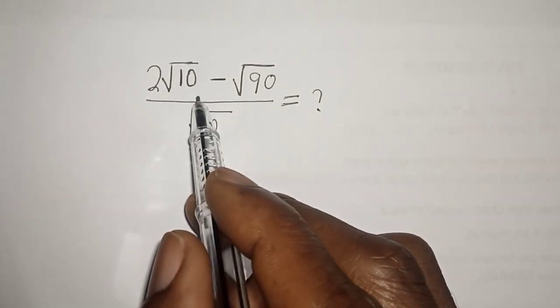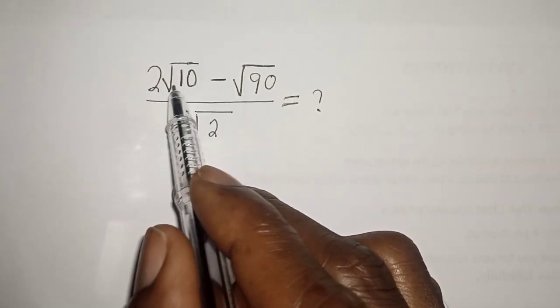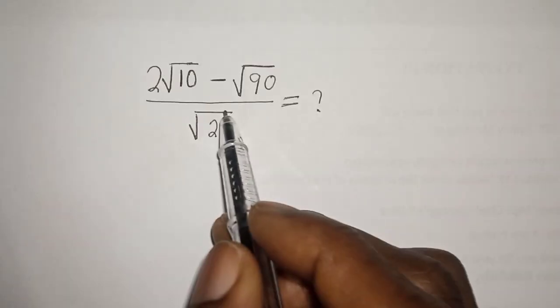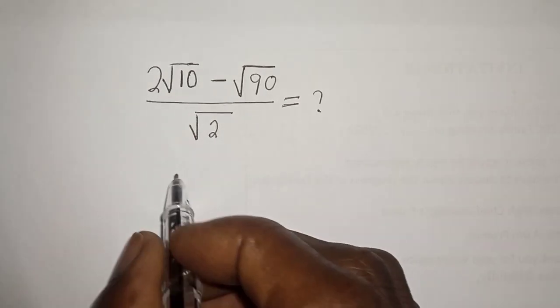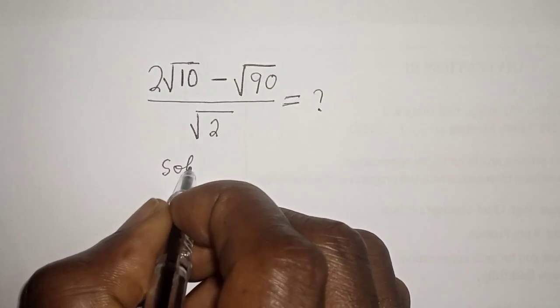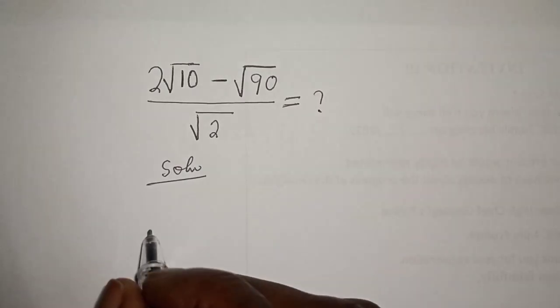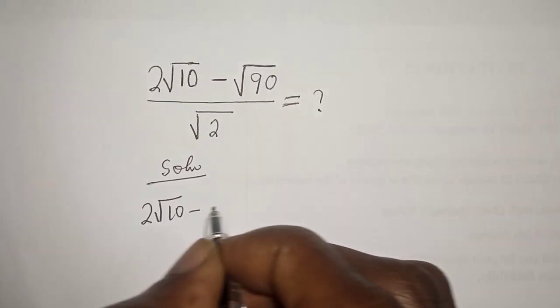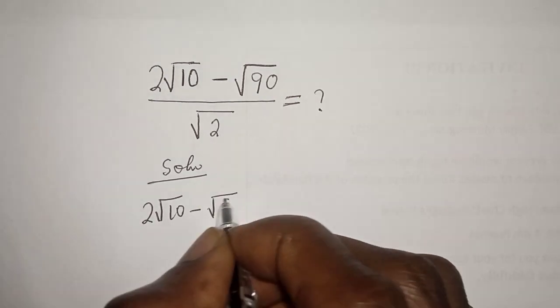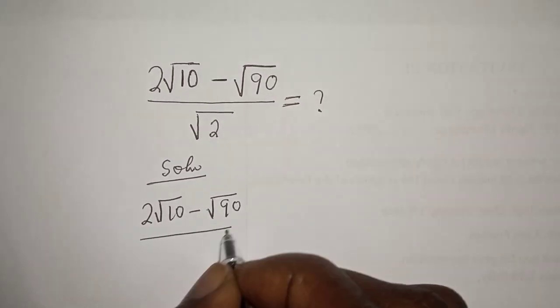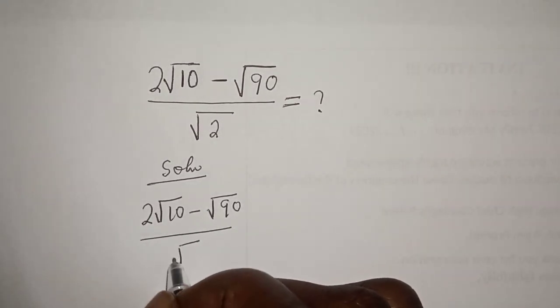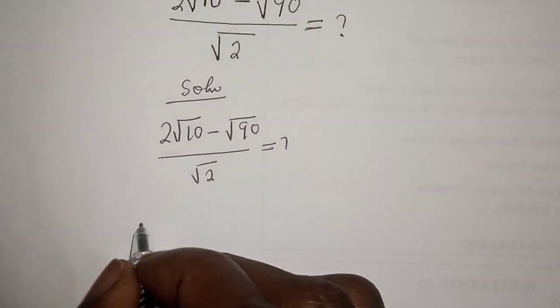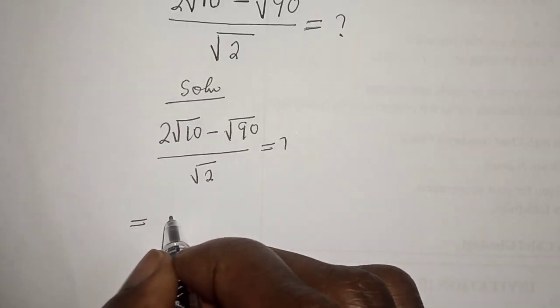Hello, how to simplify this nice math problem: 2√10 minus √90 over √2 equals what? Solution: 2√10 minus √90 over √2 equals.